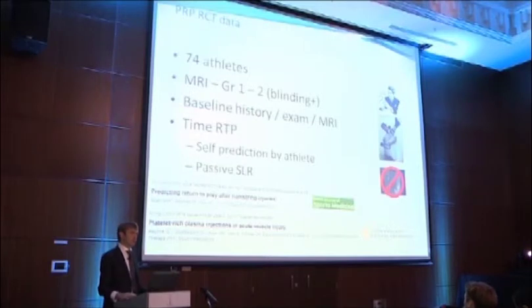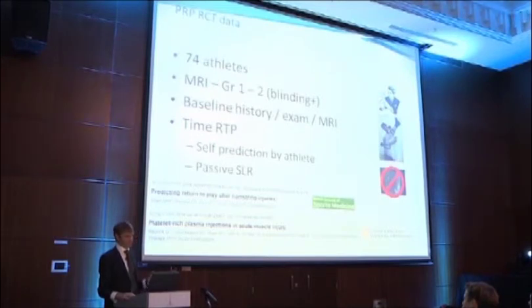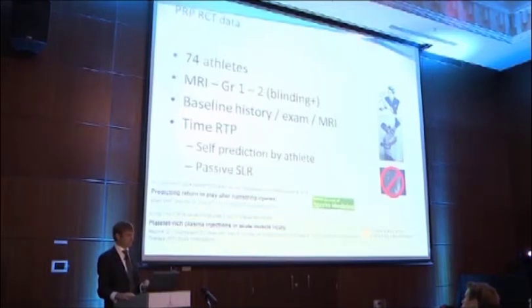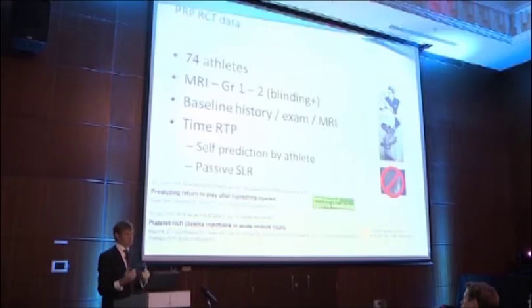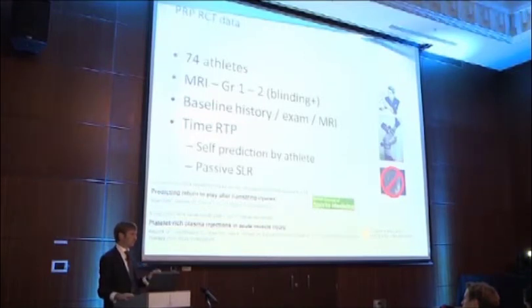How about studies where we have a combination of clinical examination data and MRI data? I was fortunate to be involved in a randomized control trial on the use of platelet-rich plasma in acute hamstring injuries. Players came in within the first week of injury; they had a baseline history, examination, and MRI performed. After this, they underwent a placebo injection or a PRP injection. The PRP was not effective — there was no difference in time to return to play between groups. After the study, we pooled the data and looked at the predictive ability of history, examination, or MRI. There were 74 athletes in this study, all having a grade one or grade two injury.